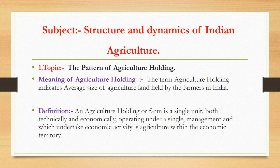The first topic is the pattern of agriculture holding. First of all we need to know what is meant by land holding. The area of land that someone owns or rents is called land holding. Any land or area which is owned by an individual or which is rented to someone else is called land holding. A person who owns land, especially one who either makes their living from it or rents it out, is called a land holder. The term agriculture holding indicates the average size of agriculture land held by farmers in India.